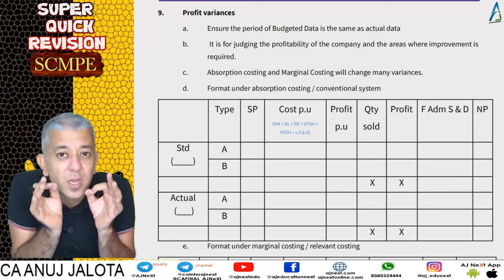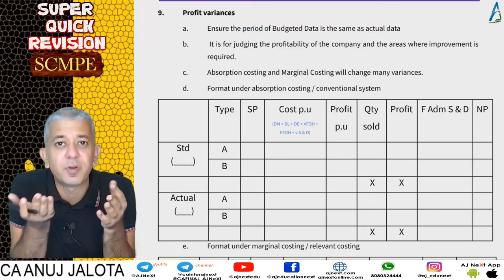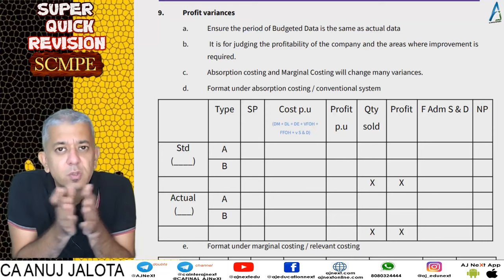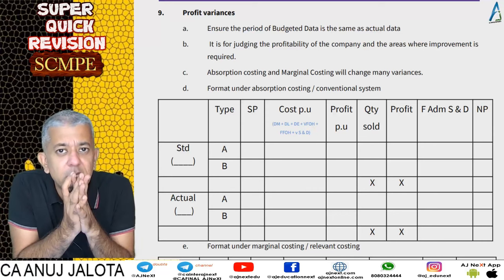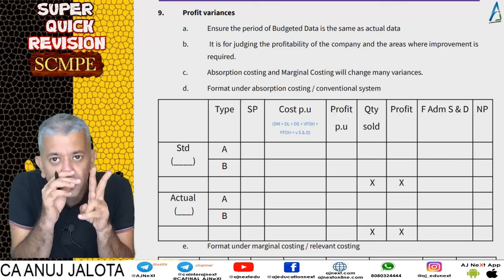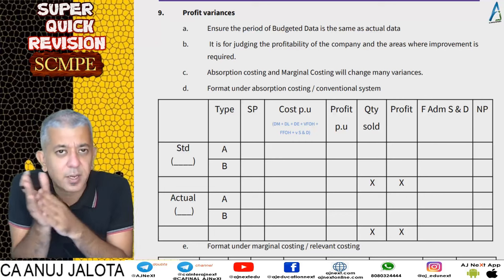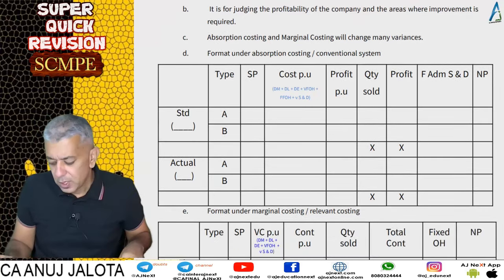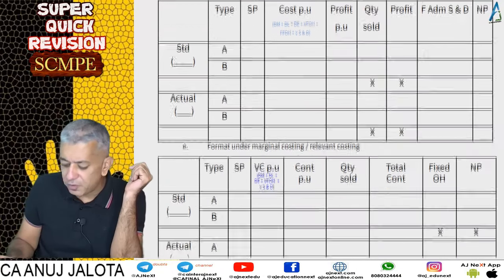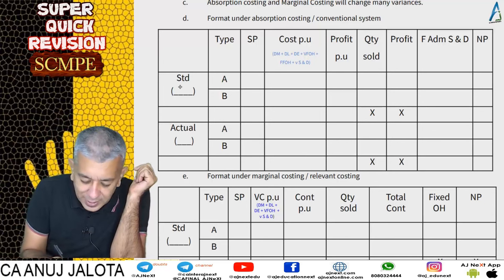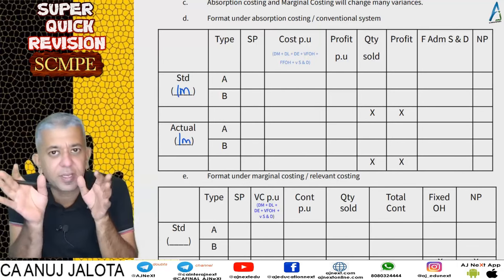Absorption costing and marginal costing will change your answer because profit is the subtraction of two things — sales and cost — and in cost, fixed overheads also come. So whether you're using absorption or marginal costing matters. Accordingly, I've given you two formats: one under absorption and one under marginal costing. Under absorption costing, the format is made in this particular manner. Suppose standard data is there for one month and actual data is there for one month.